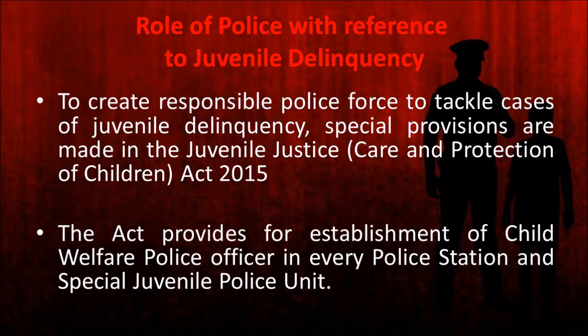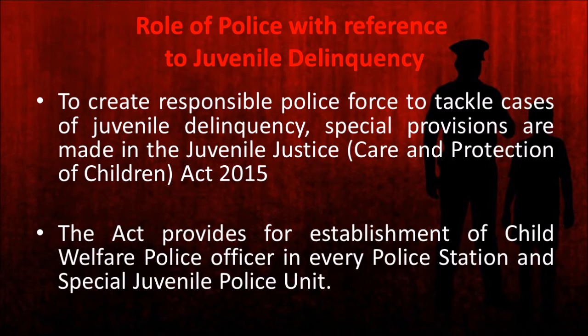Police play a very important role in dealing with juvenile delinquency. The first law-abiding authority that juvenile offenders come in contact with are the police authorities. These juveniles are mostly children who are misguided, exploited, ill-treated, and some of them are victims themselves. That is why it is important that police deal with them sensitively, and why these police authorities who come in contact with children are required to be specially trained for this purpose.